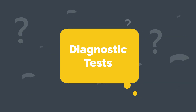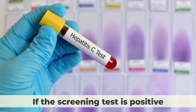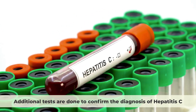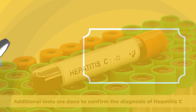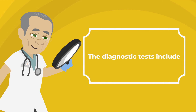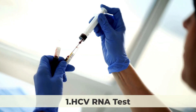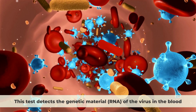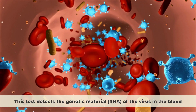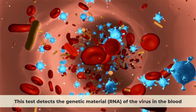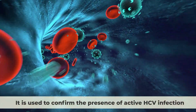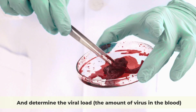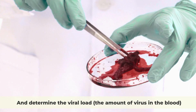If the screening test is positive, additional tests are done to confirm the diagnosis of Hepatitis C. The first diagnostic test is the HCV RNA test, which detects the genetic material, RNA, of the virus in the blood. It is used to confirm the presence of active HCV infection and determine the viral load — the amount of virus in the blood.